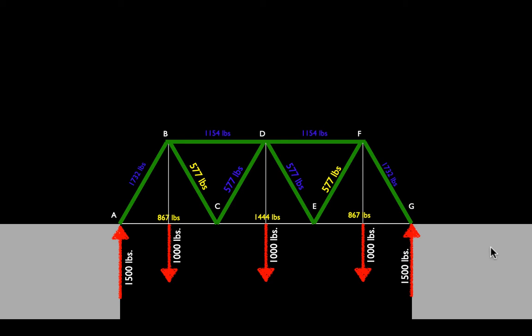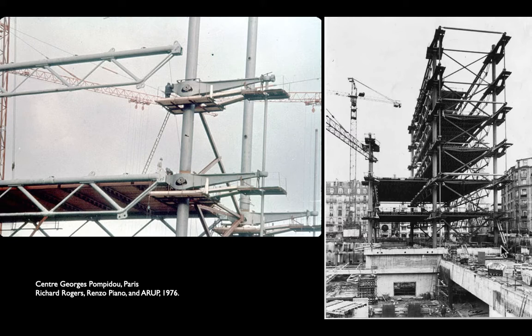Instead we have this network of triangulated panels that resolves all of the loads into axial components, removing a lot of dead weight, which means trusses can span a lot farther. Trusses are already a long-span system — vector-active systems are by their nature long-span. The classic example is the Pompidou Center in Paris, where these trusses just march down a line. There's one structural bay that is essentially extruded or repeated down the length of the building.